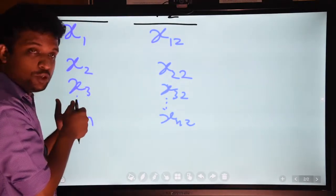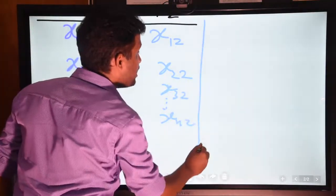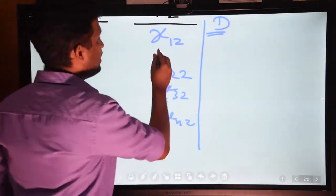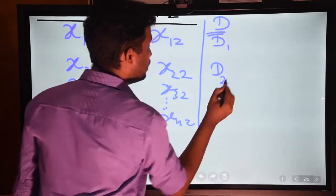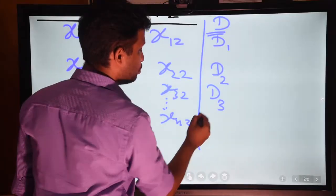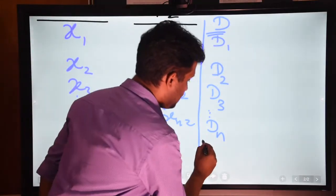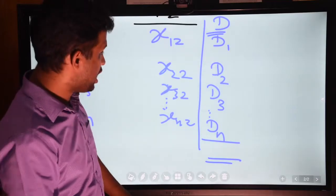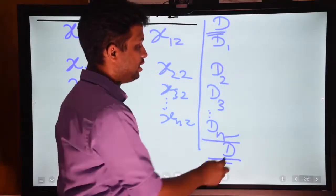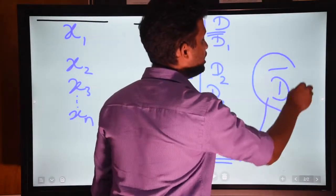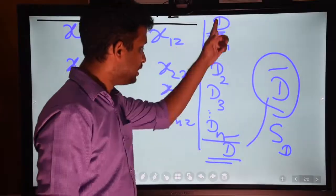There should be a difference between the first value and the second value for each individual, so we can create another variable for the differences. We name them d1 for the first individual, d2 for the second, d3 for the third, and so on up to dn. We can then create the mean for these differences, called d-bar, and we can also calculate the standard deviation for this difference variable.